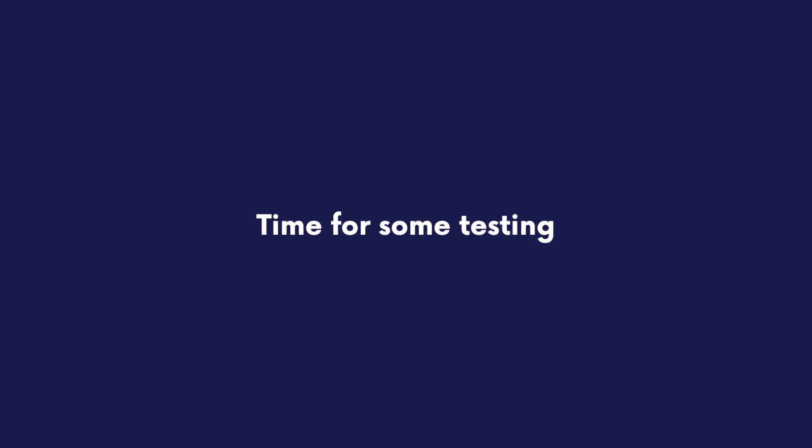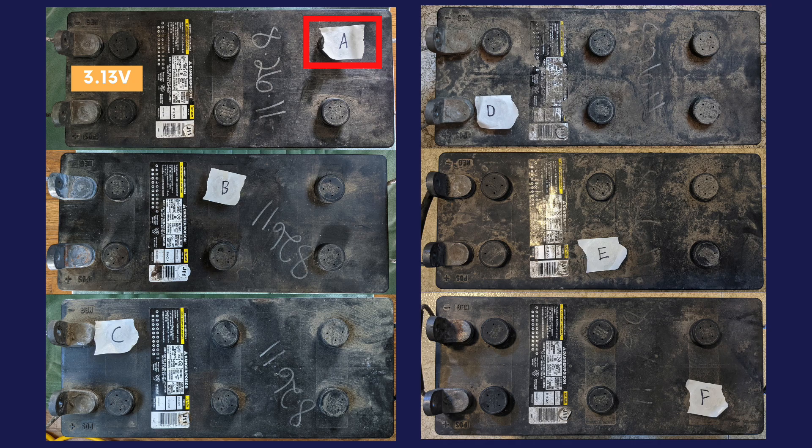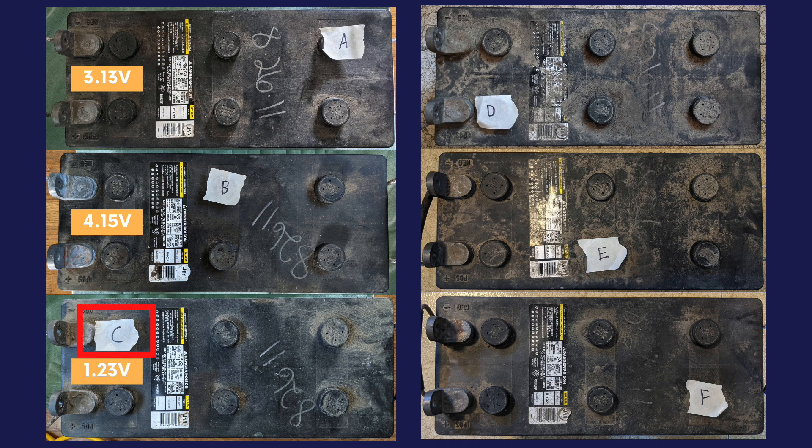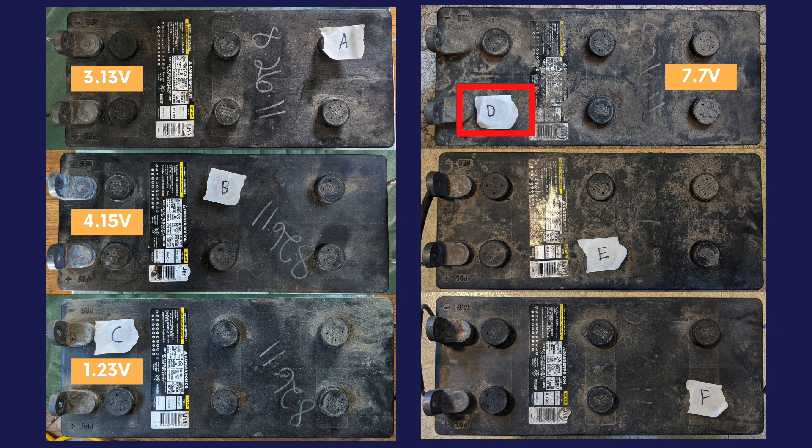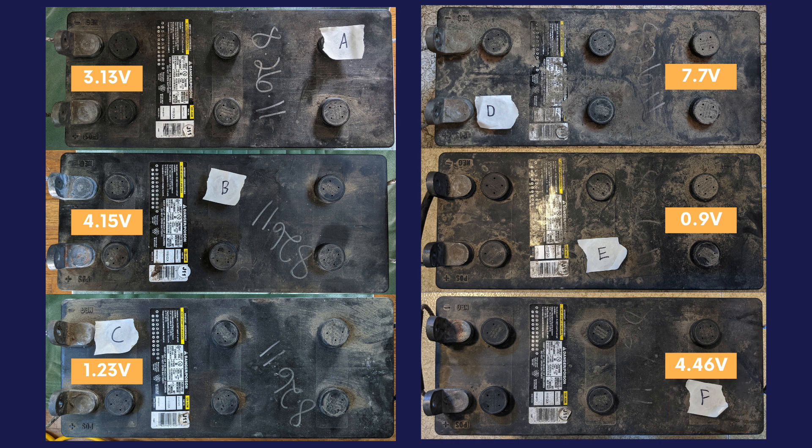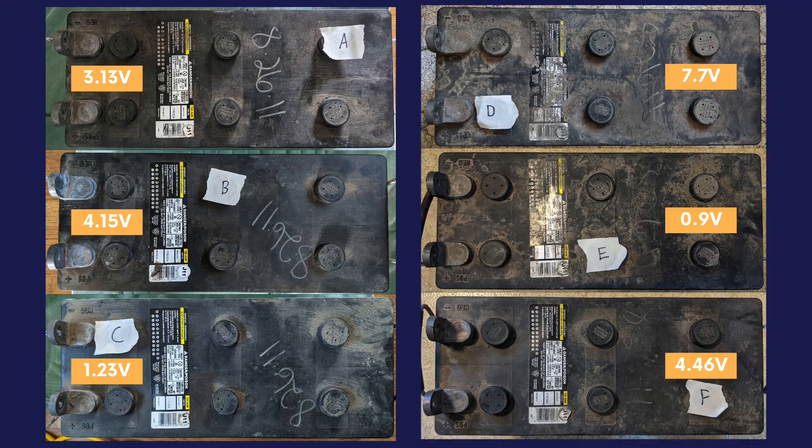To start off the testing, I took an initial voltage reading of each of the batteries with a digital multimeter. Battery A gave a rating of 3.13 volts, battery B 4.15 volts, C 1.23 volts, D 7.7 volts, E 0.9 volts, and battery F had a rating of 4.46 volts. All of these voltage readings were extremely low and to my knowledge had been at this state for easily a month or two, if not many more. Because of these lower readings, the batteries most likely were not in great condition anymore and had probably already sulfated badly. However, I wanted to take a look and see if any of them might come back to life.